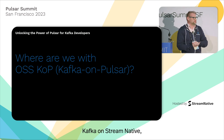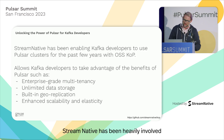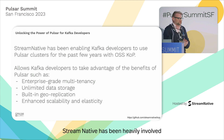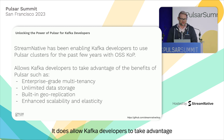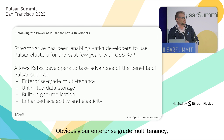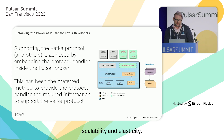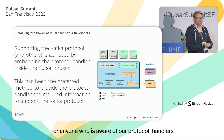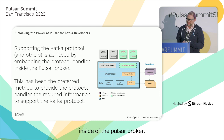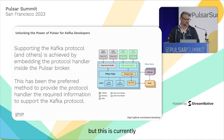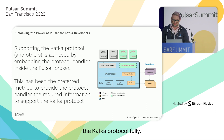Before we get into Kafka on Stream Native, which has been mentioned a few times today, I wanted to talk about where we are with open source KOP. Stream Native has been heavily involved in the creation of open source KOP over the past few years. It does allow Kafka developers to take advantage of the benefits of Pulsar — our enterprise-grade multi-tenancy, the unlimited data storage, built-in geo-replication, and enhanced scalability and elasticity. Supporting the Kafka protocol was achieved by embedding the protocol handler inside of the Pulsar broker, which is the currently preferred method so that the protocol handler has all of the required low-level information it needs to support the Kafka protocol fully.